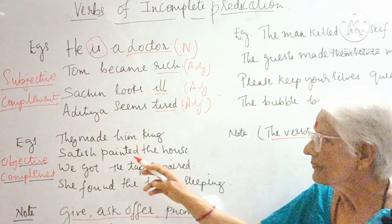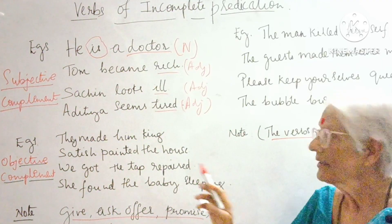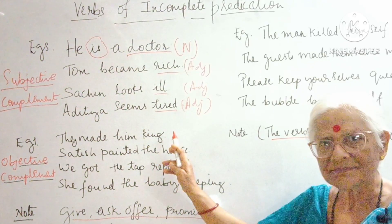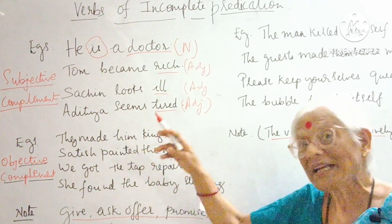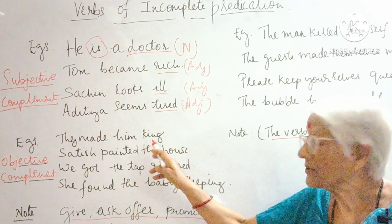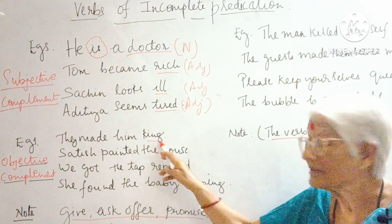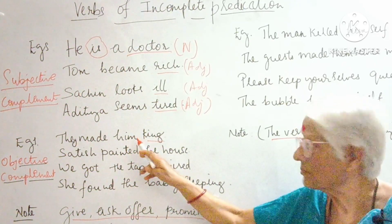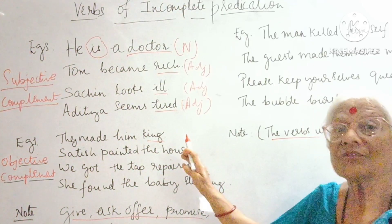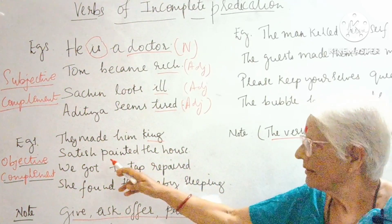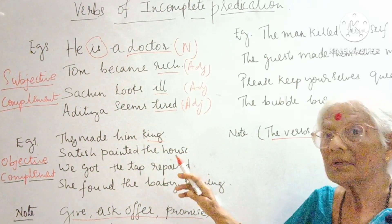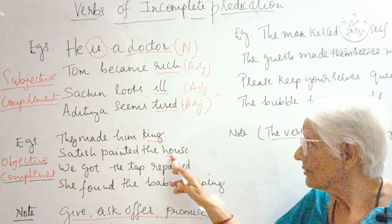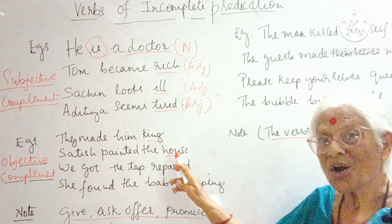Now let's go to the next one: 'They made him king.' Here you have an object — made whom? Him. Made what? King. You are talking about 'him,' the person who becomes the king. So 'king' is a noun but it belongs to the object. This is called an objective complement. Another example: 'Sathish painted the house' — which house? The house that was painted. So this is an objective complement.